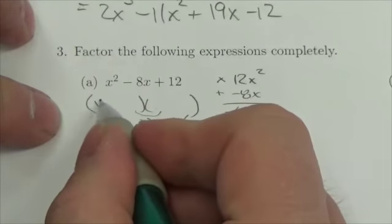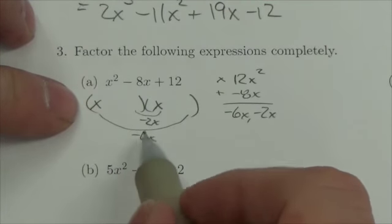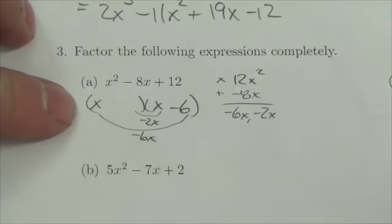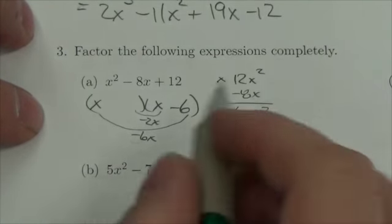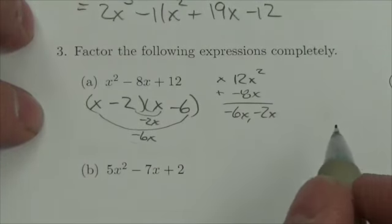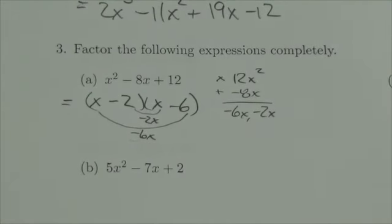What's nice about that is that is just x and x. So x times what gets me negative 6x? It's got to be negative 6. x times what gets me negative 2x? It's got to be negative 2. And so there it is in factored form: (x - 2)(x - 6).